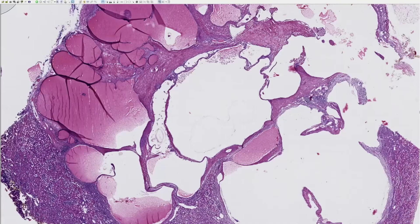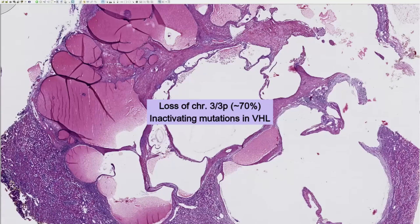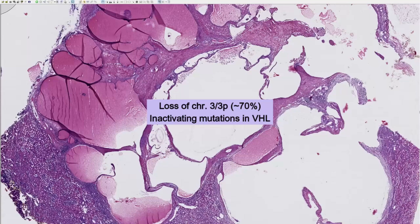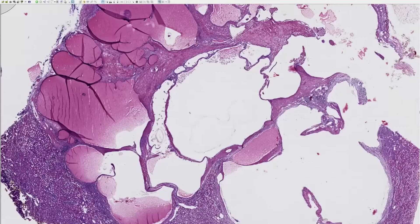On the molecular level, multilocular cystic renal neoplasm of low malignant potential shows alterations of the VHL gene, similar to CCRCC. It may be seen in a sporadic setting, but also in a syndromic setting, occurring in von Hippel-Lindau syndrome. In most instances, we see a complete loss of chromosome 3; sometimes there is loss of only the short arm of chromosome 3, 3p, where the VHL gene locus is located. In a minority of cases, only inactivating mutations of the VHL gene are identified by FISH analysis.